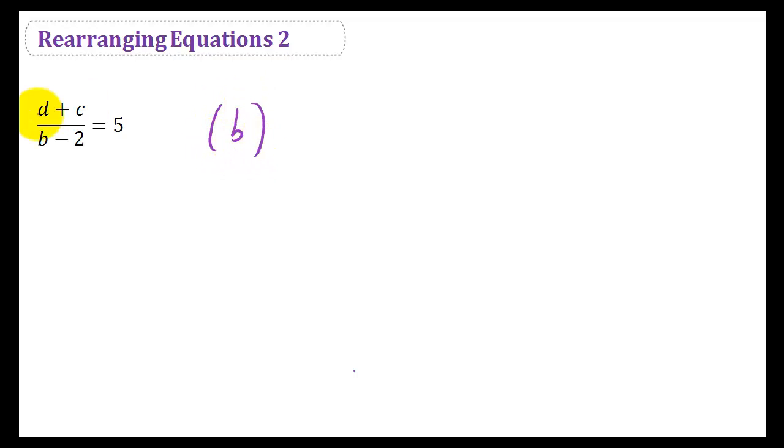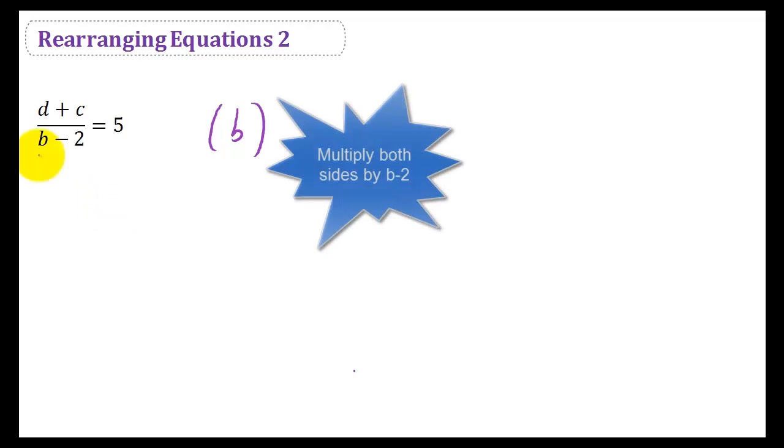Now when we're dealing with fractions, the key thing is to try and get rid of fractions, because generally they make equations more difficult. So we've got B minus 2 on the bottom, and the way to get rid of that - we're obviously dividing by B minus 2, so the best thing to do is to times by B minus 2. So let's multiply both sides by B minus 2.